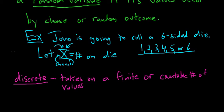So in our example up here, the possible values were one through six. That's a finite number of values, so this here is a discrete random variable.